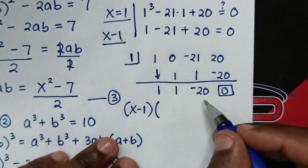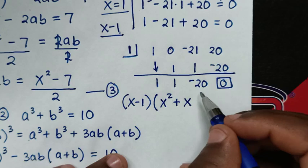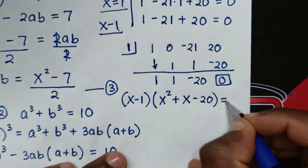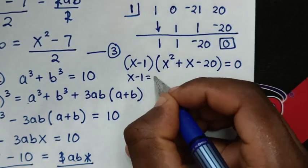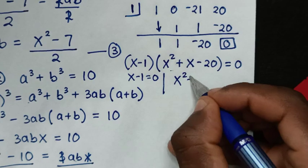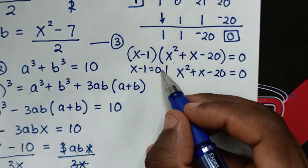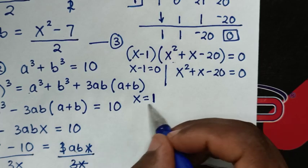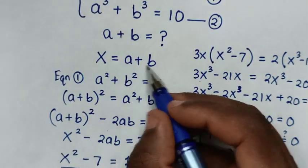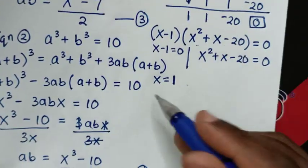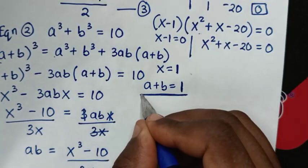So the cubic factors as x minus 1 times x squared plus x minus 20 equals 0. From the first solution, x minus 1 equals 0 gives x equals 1. Since x equals a plus b, this means a plus b equals 1, which is one of the values of a plus b from this problem.